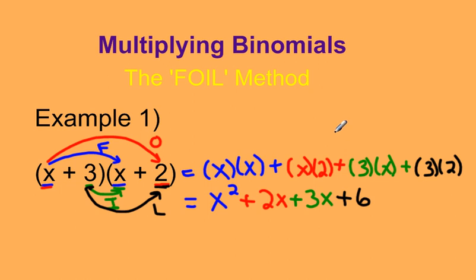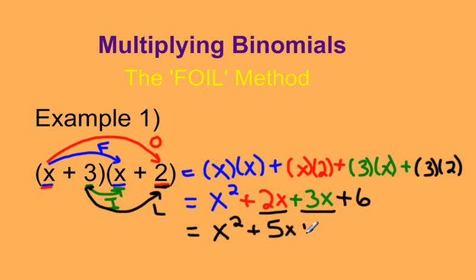Now I'm going to look to see if I can collect any like terms and simplify. I see I have 2x and 3x that I can combine. 2x plus 3x can be thought of as adding 2 oranges plus 3 oranges — so 2 plus 3 is 5x. This equals x squared plus 5x plus 6. So x plus 3 multiplied by x plus 2 gives a final answer of x squared plus 5x plus 6.